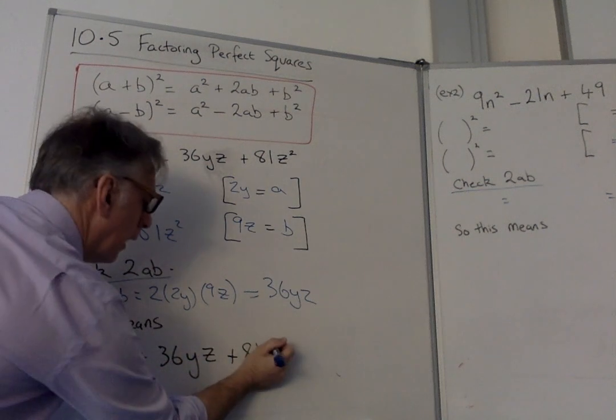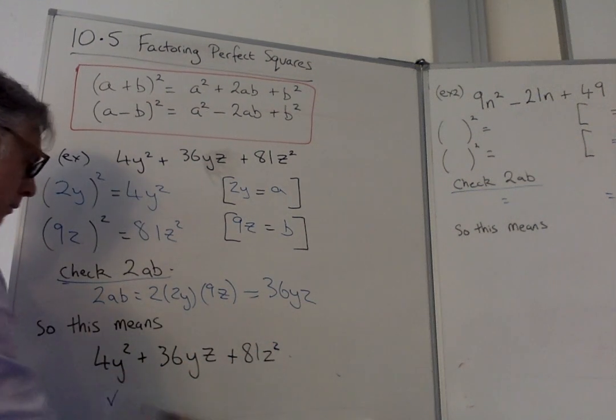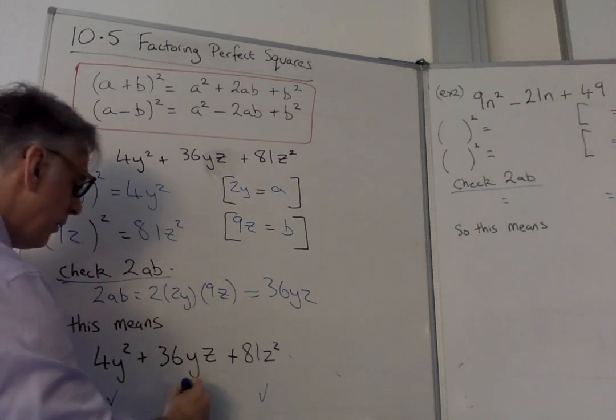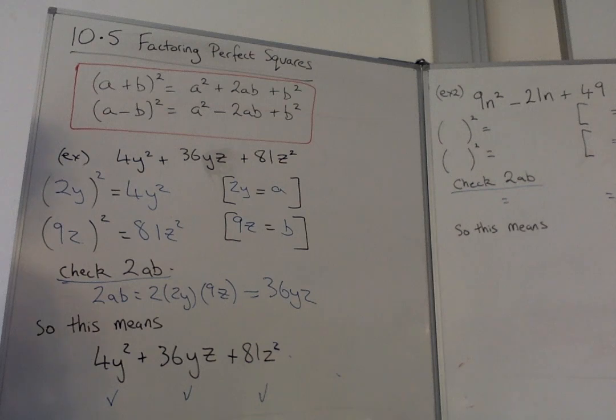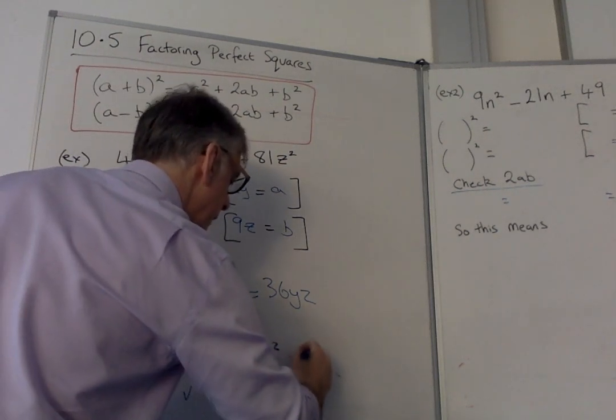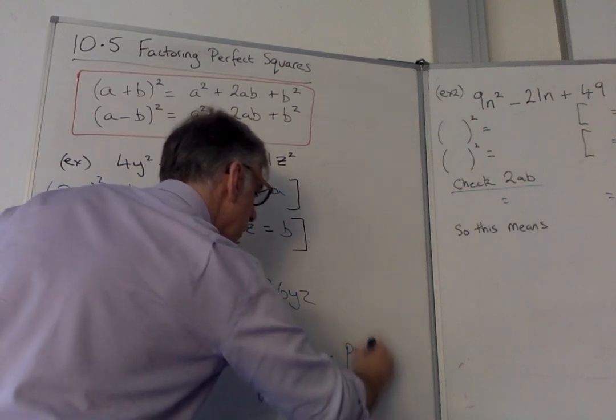So if we're looking at the original equation, we were trying to see if it's a perfect square. That is a perfect square part. That is a perfect square, so it's OK. We tested the 36yz. So all three parts correspond to this pattern. So this means it is a perfect square.